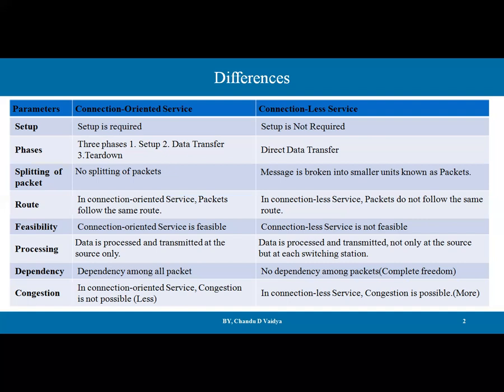The next parameter is route. In connection-oriented service, packets follow the same route — there is no freedom to transfer packets via a random path. Whatever path is selected in the first phase, only that path is used for packet transmission. But in connectionless service, packets do not follow the same route; they have full freedom. For example, if we have routers R1, R2, R3, in connectionless service the path could be R1→R2→R4→R5 or anything.